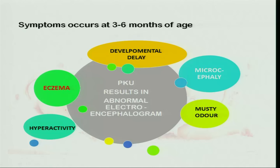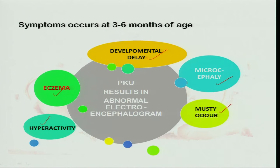Symptoms occur generally at 3 to 6 months of age, and are seen when the baby is born. The child is hyperactive, has eczema, and there are developmental delays. Many milestones are delayed and the child has microcephaly — the size of the head is very small — and a musty odor. This results in an abnormal electroencephalogram, meaning abnormal brain activity is found in the baby.